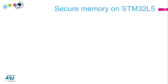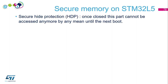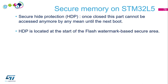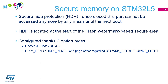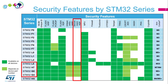On the L5, secure memory is closely linked to the TrustZone configuration. The secure hide protection, also called HDP, closes this part so it cannot be accessed by any means until the next boot. It is located at the start of the flash as a watermark-based secure area. The L5 features a Cortex-M33 with TrustZone; when TrustZone is activated, the chip has two worlds — secure and non-secure — and the HDP sits inside the secure world at the beginning of flash. It is configured via option bytes: an HDP activation bit and an HDP end address. This feature is available across the L5, H7, G0, and G4 families on specific devices — always check the reference manual for each one.